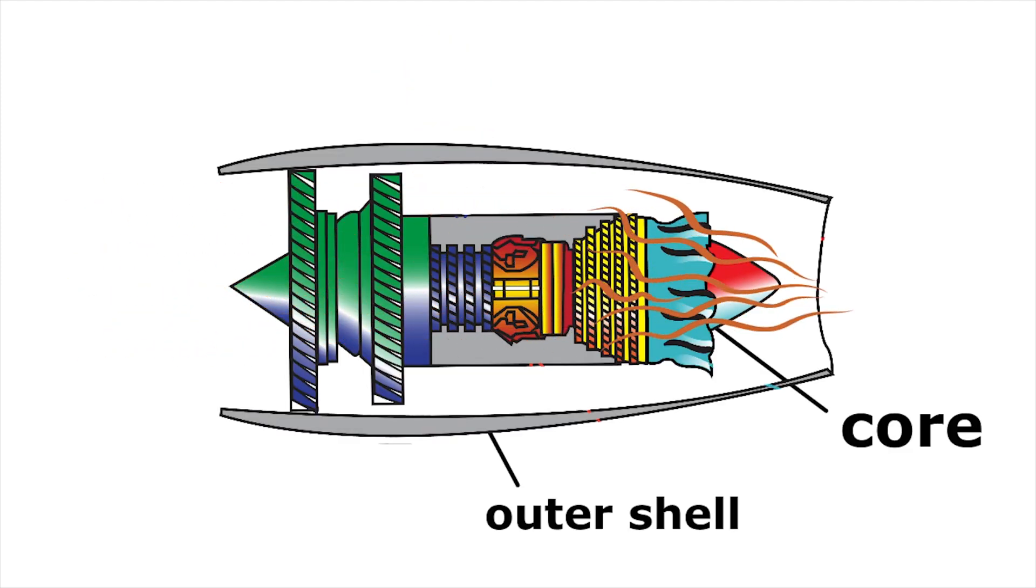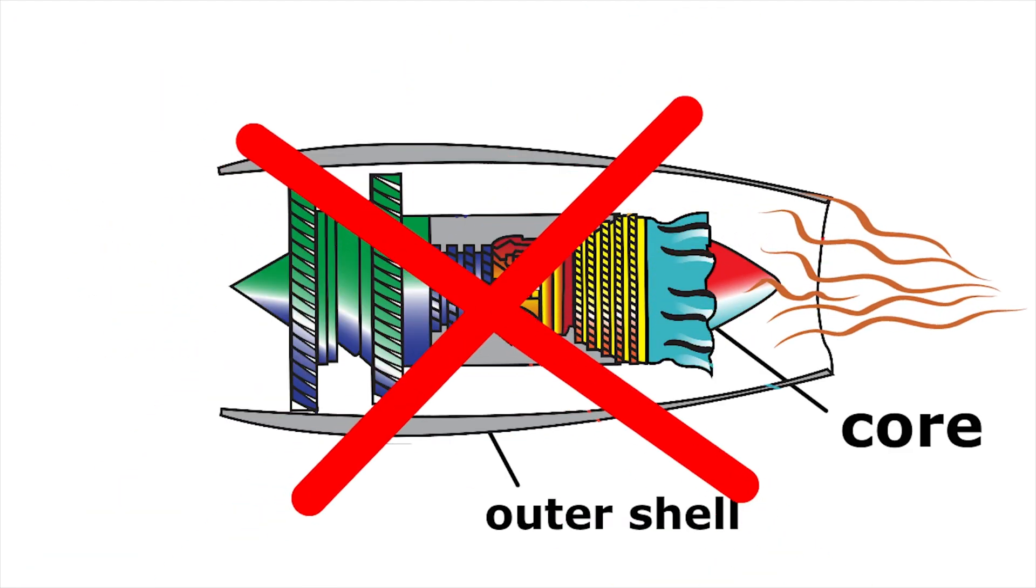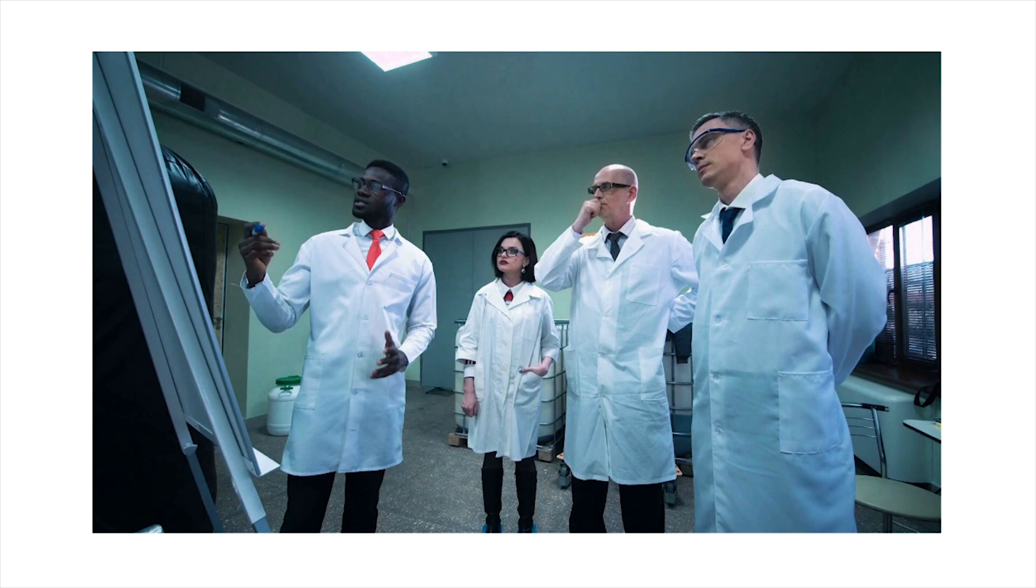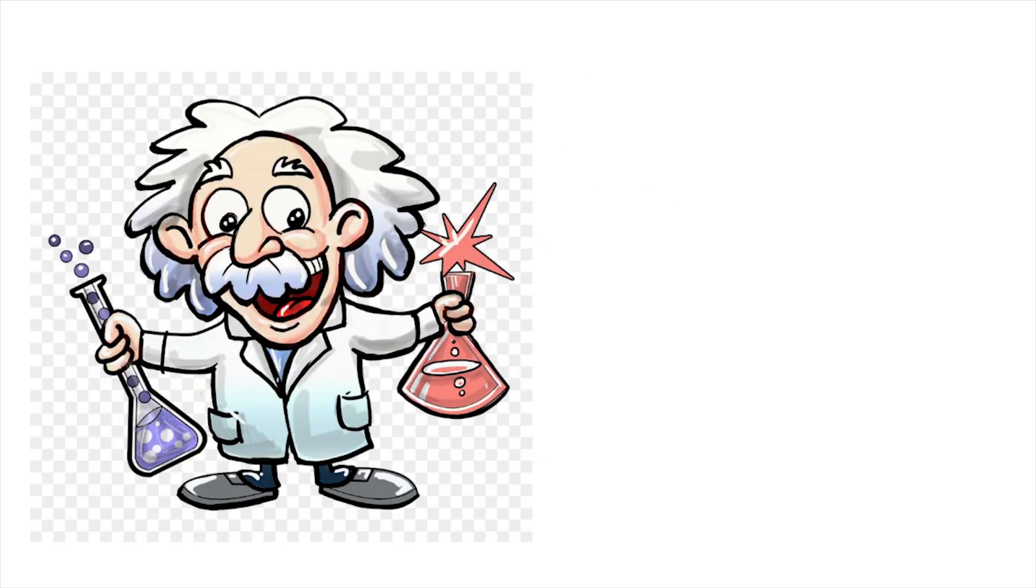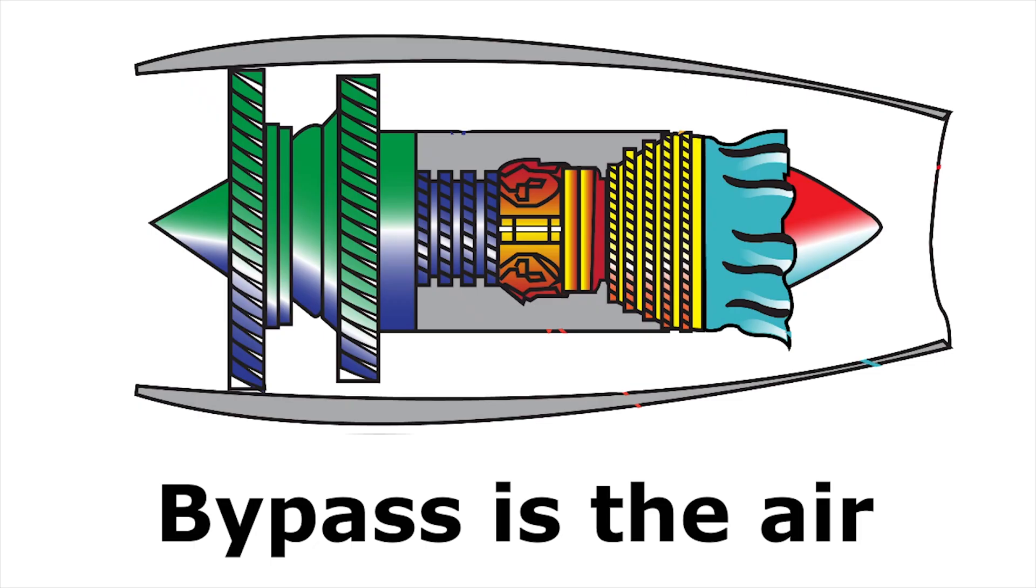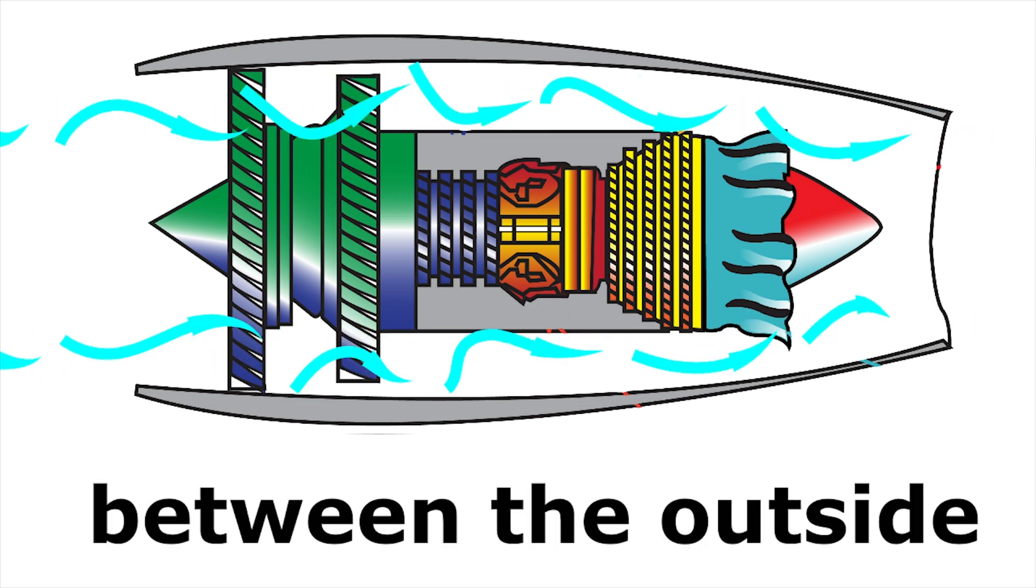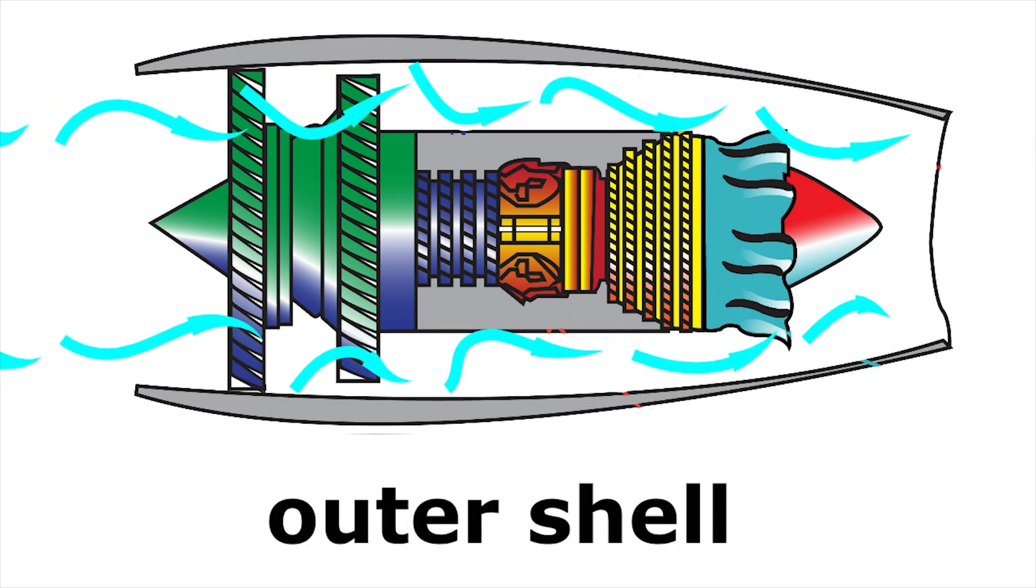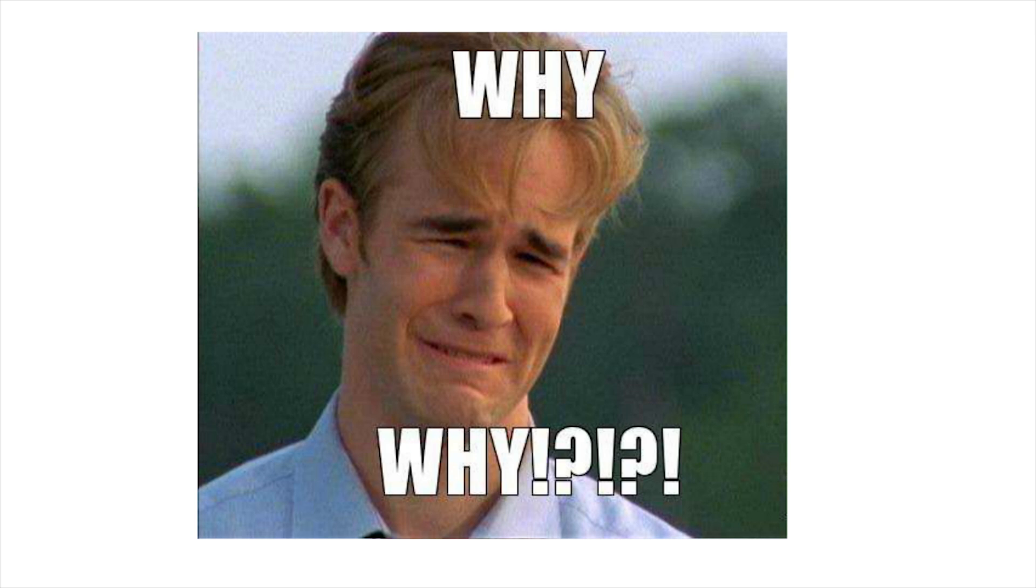Not all the air goes directly into the engine's core and out of the exhaust. The clever folks with the white lab coats also have another term they like to throw around. Bypass. Bypass is the air that goes around the engine between the outside of the core and the outer shell of the engine. But why bypass?